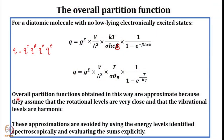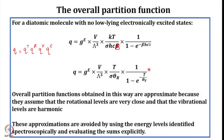Overall partition functions obtained in this way are approximate because they assume that the rotational levels are very closely spaced and that the vibrational levels are harmonic. These approximations are avoided by using energy levels identified spectroscopically and evaluating the sums explicitly, which is not easy. The partition function written in integrated form is actually approximate, for the reasons just discussed.